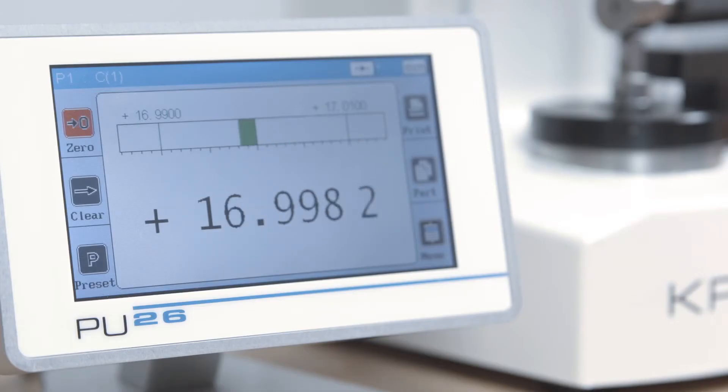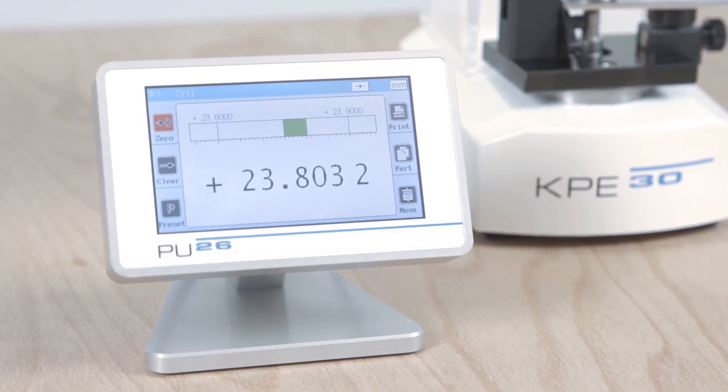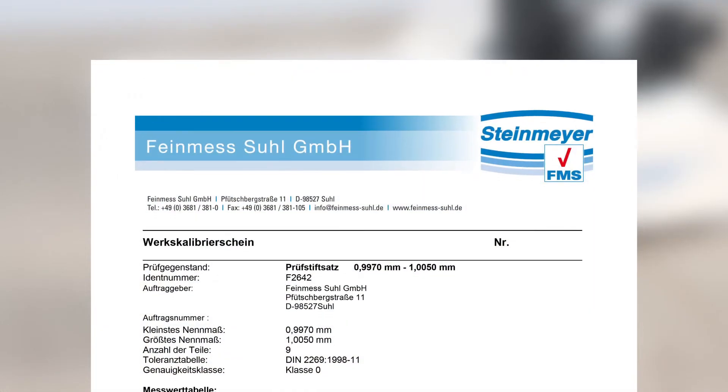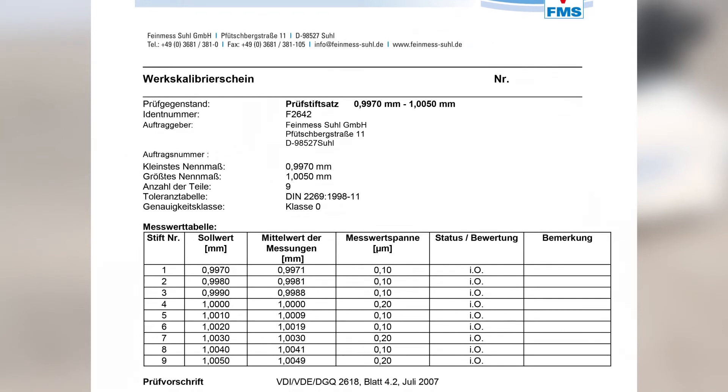The PU26 display unit that simultaneously acts as a PC interface can also be configured with preset functions as well as limit and tolerance marks amongst other things. The FMSView software also offers an easy way to generate and store test logs.